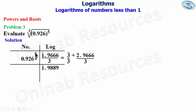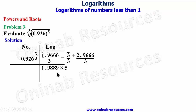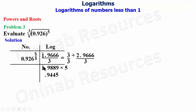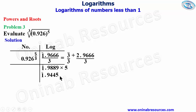We now multiply by the numerator of the fractional index, which is 5. Multiplying 0.9889 by 5: 5 times 9 gives 45 — write 5, carry 4; 5 times 8 gives 40 plus 4 equals 44 — write 4, carry 4; 5 times 8 gives 44 again — write 4, carry 4; 5 times 9 plus 4 gives 49 — write 9. The integer part: bar 1 times 5 gives bar 5, plus 4 carried gives bar 1. So the result is bar 1.9445.